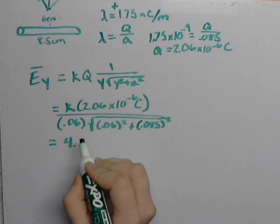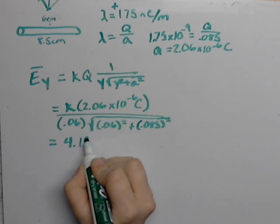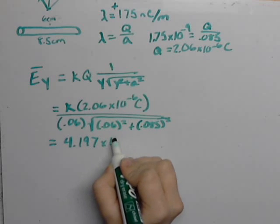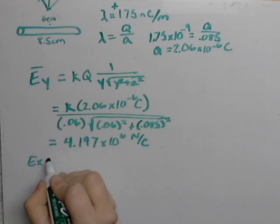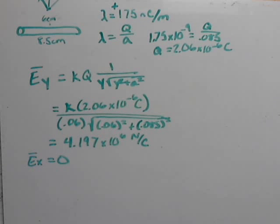And when you do all that calculation, you're going to get 4.197 times 10 to the 6 newtons per coulomb. So this is the y component. Like I said, our x component is going to be 0 because they cancel.